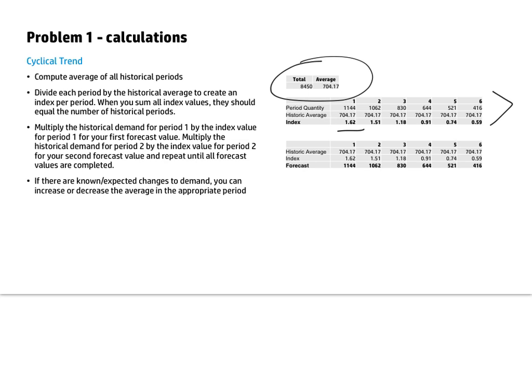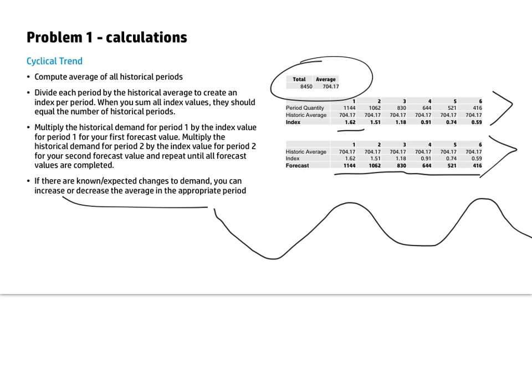We repeat that across the six periods we need to forecast, giving us an index value for each. Then for our forecast, we multiply the historic average by the index, and that gives us our forecast for the six periods. Applying this index going forward, the demand would just continue up and down at the same level. If you know something is changing, you could build that into the forecast — whether an increase or decrease — but this index will allow you to repeat the pattern over time.